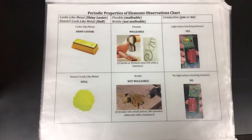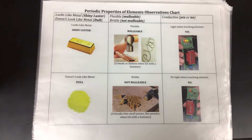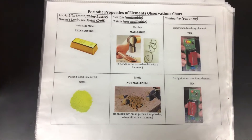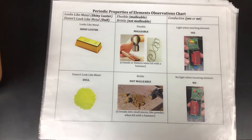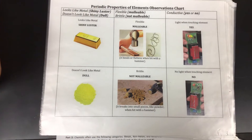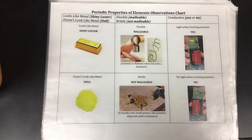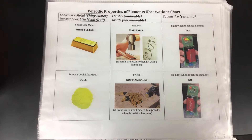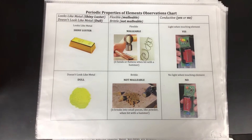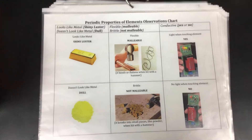The properties we're going to be looking at are structured on this sheet. We're going to look at how the element looks — does it look like a metal? Is it shiny with luster, or does it look dull? We're also going to look at the elements when they are hit or bent with a hammer. If the element is flexible or malleable, it will flatten out or bend without breaking. Versus something that is brittle — when you hit it with a hammer, it breaks into pieces or crumbles instead of flattening.